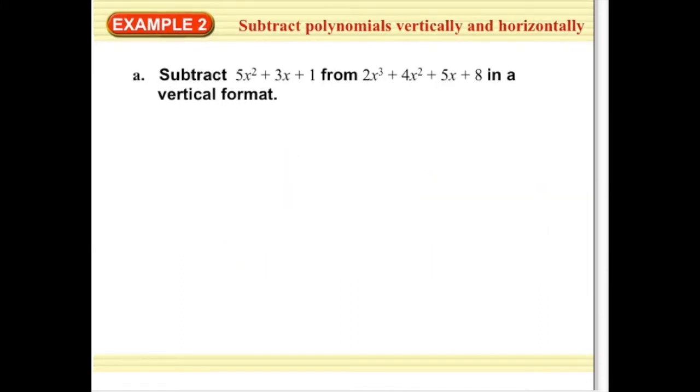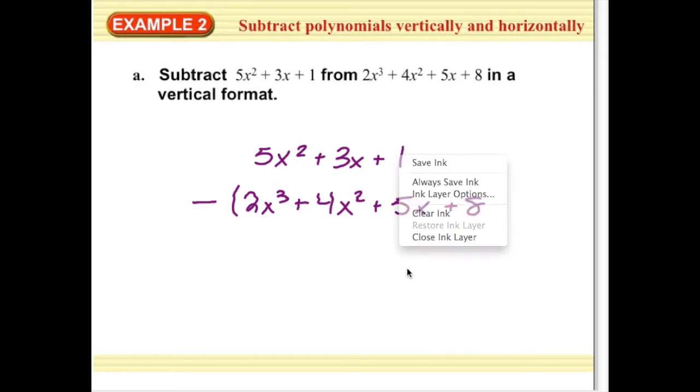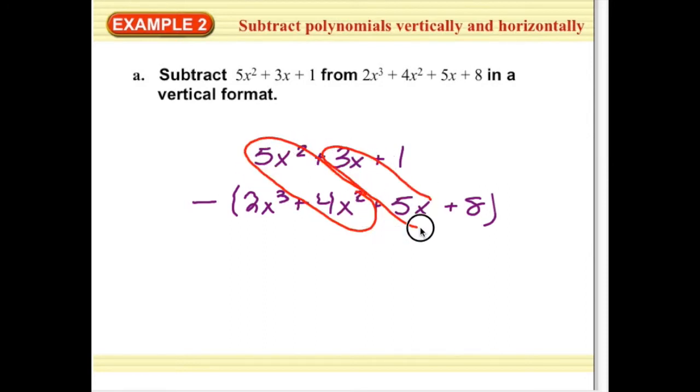Next up, we're going to do some subtraction. This is a little different, but we're still going to use the same methods here. It does say vertical format, so 5x squared plus 3x plus 1 minus 2x cubed plus 4x squared plus 5x plus 8. And I'm just going to shift this first function, if I could. I would like to shift that top function over a little so that I have my terms lined up nicely, the terms that correspond. However, I can't edit that right now at the moment.